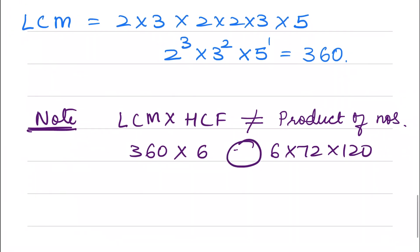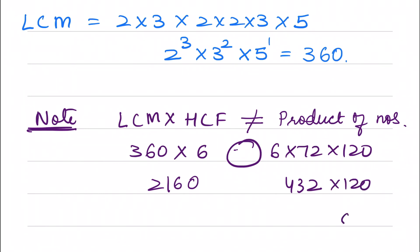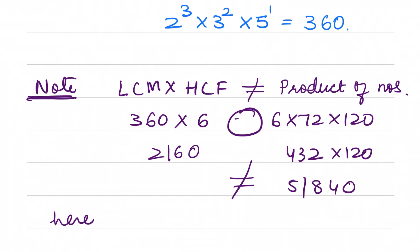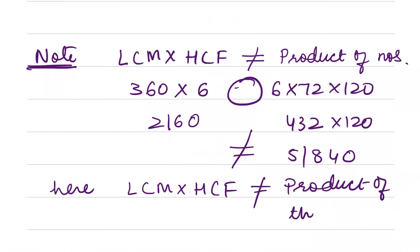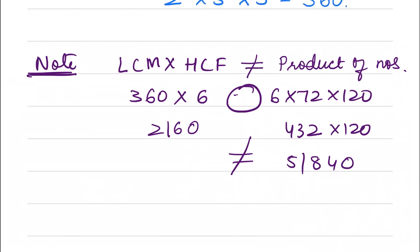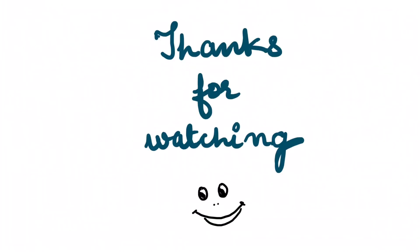We can check: LCM is 360 into HCF is 6, giving 2160. But the product of the numbers is 6 into 72 into 120, which equals 51840. So these are not equal, confirming that LCM into HCF does not equal the product for three numbers — only for two numbers does that hold. So we can see there are many applications of the fundamental theorem of arithmetic. Thanks for watching, stay tuned and see you all.